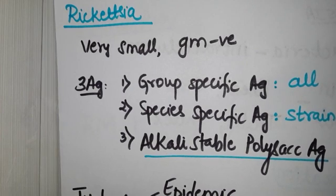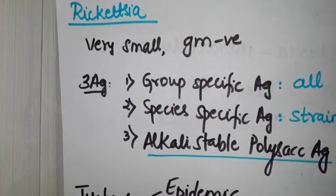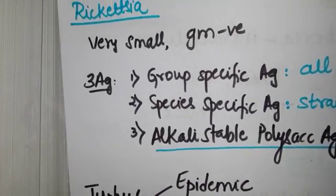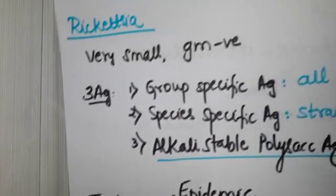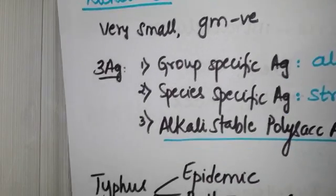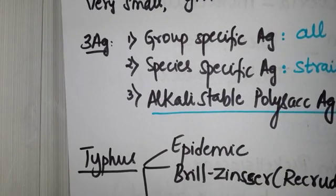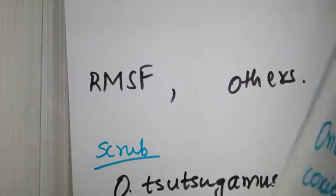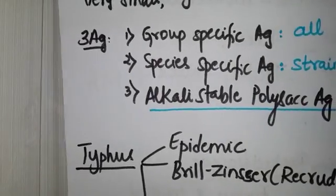This alkali stable polysaccharide antigen is of prime importance in your Weil-Felix reaction. I'll talk about Weil-Felix reaction when we talk about diagnosis. Now, of the various types of illnesses they cause, luckily we can classify them into typhus fevers, spotted fevers, and scrub fevers.